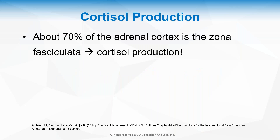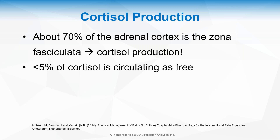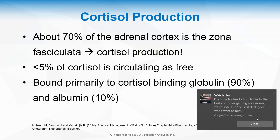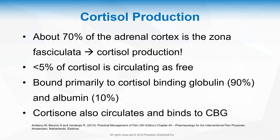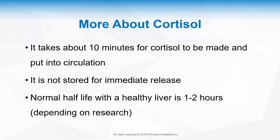About 70% of your adrenal cortex is the zona fasciculata — it's big and thick for a reason; cortisol production is really important. Only about 5% or less of cortisol circulates as free. Remember, free hormone is the active hormone that binds to receptors. Cortisol is bound primarily to cortisol binding globulin (transcortin) and a little to albumin. You also have inactive cortisone, which also circulates and is bound to cortisol binding globulin.